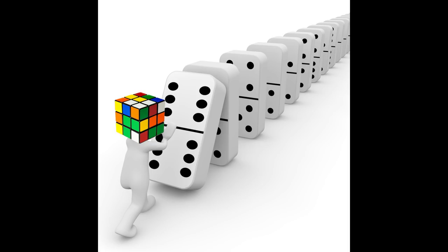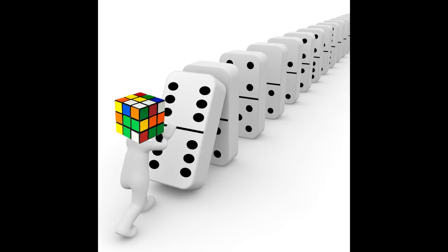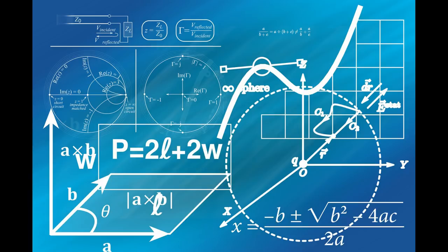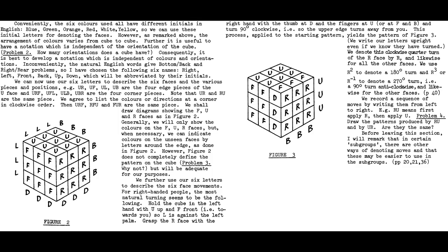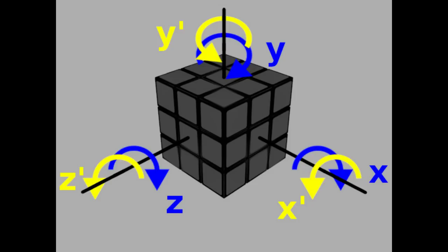One of the most influential books is definitely Notes on Rubik's Magic Cube by David Singmaster. This is very much a more mathematical treatise; however, it does include a basic solution that is identical to the most infamous solution in cubing today. Far more important, however, is the introduction of Singmaster Notation — the basic notation that we all use for cubes today, minus the M, E, and S slices or rotations.